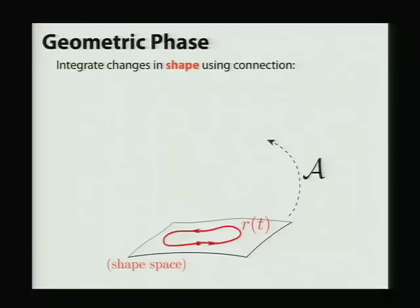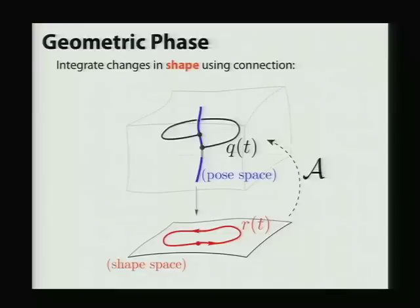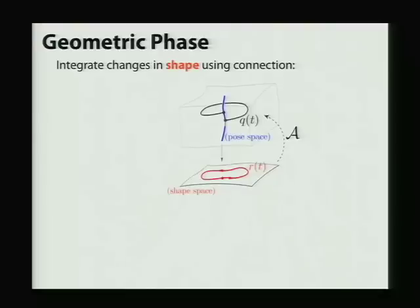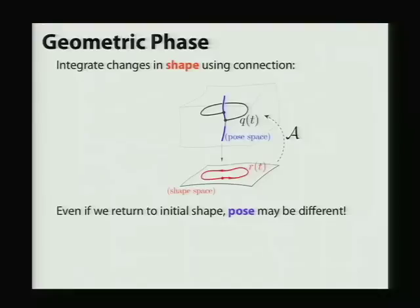So we take tangents to this vector, plug it into our connection, integrate, and we get an update to our pose. And the interesting thing that happens in the case of non-holonomic vehicles is that even if we return to our initial shape, the pose of the vehicle might be different.